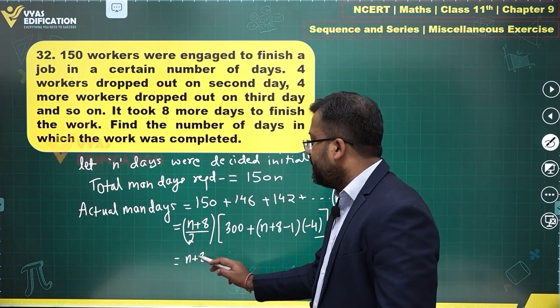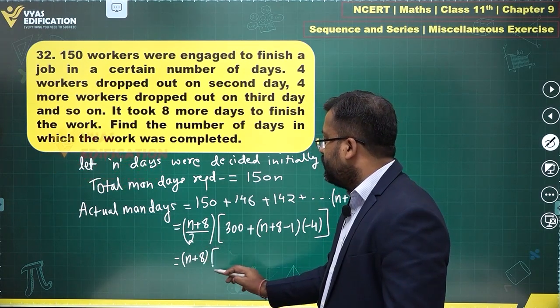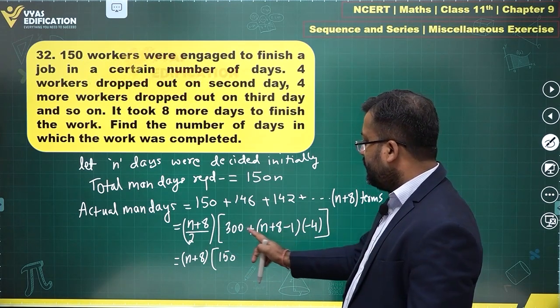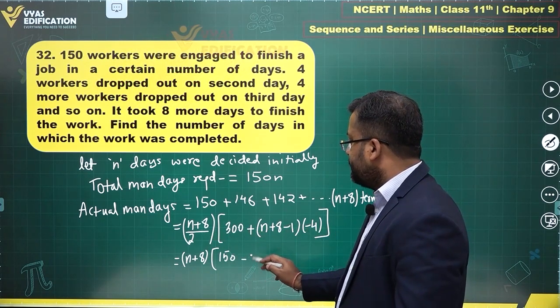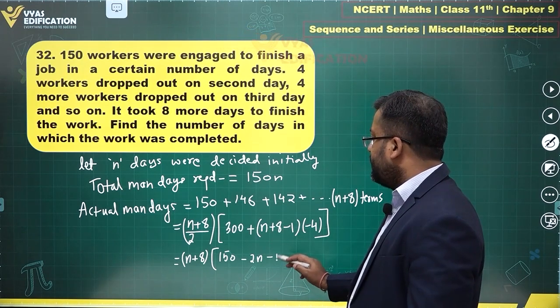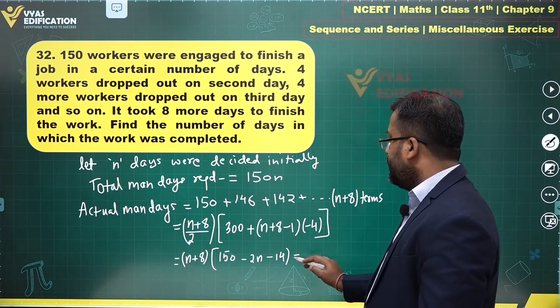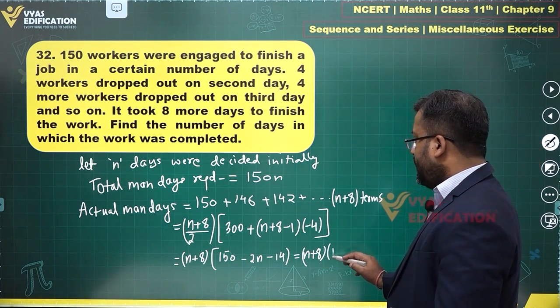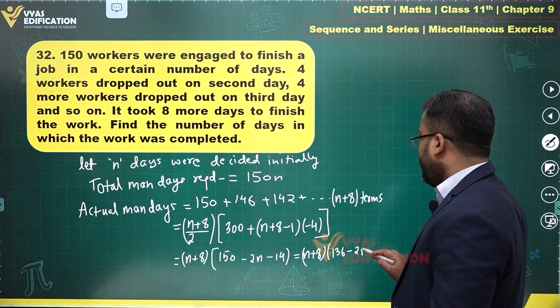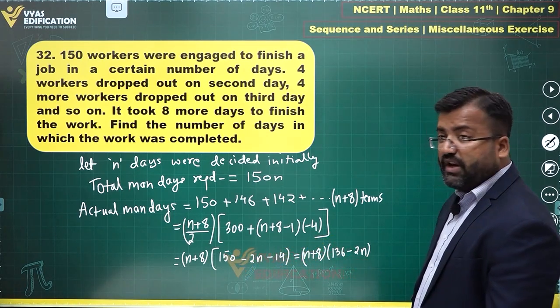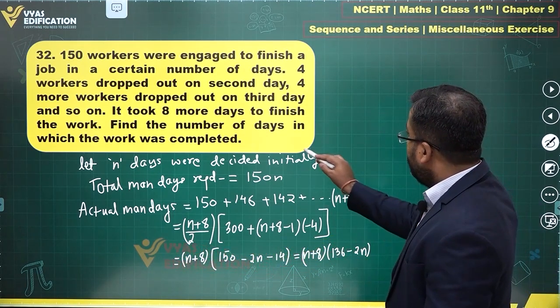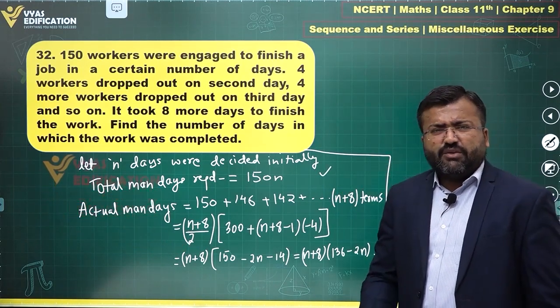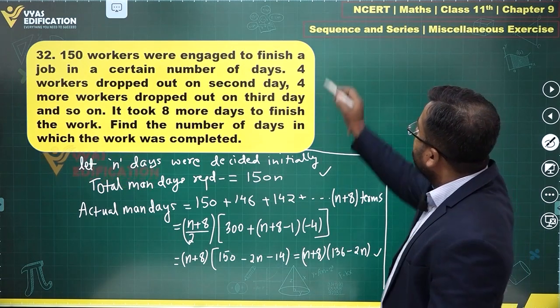Let's simplify this. This is n plus 8. Multiply this 2. This is 150 minus 4 divided by 2 will be minus 2. So this becomes minus 2n and minus 14. This is what you get. So n plus 8 is okay. And this is 136 minus 2n. If you can observe this carefully, this is what you get. What is happening? The number of man days required and the actual number of man days should be equal.